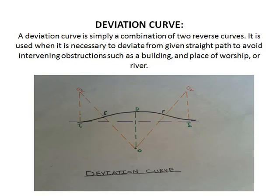A deviation curve is simply a combination of two reverse curves. It is used when it is necessary to deviate from a given straight path to avoid intervening obstructions such as a building, place of worship, or river.